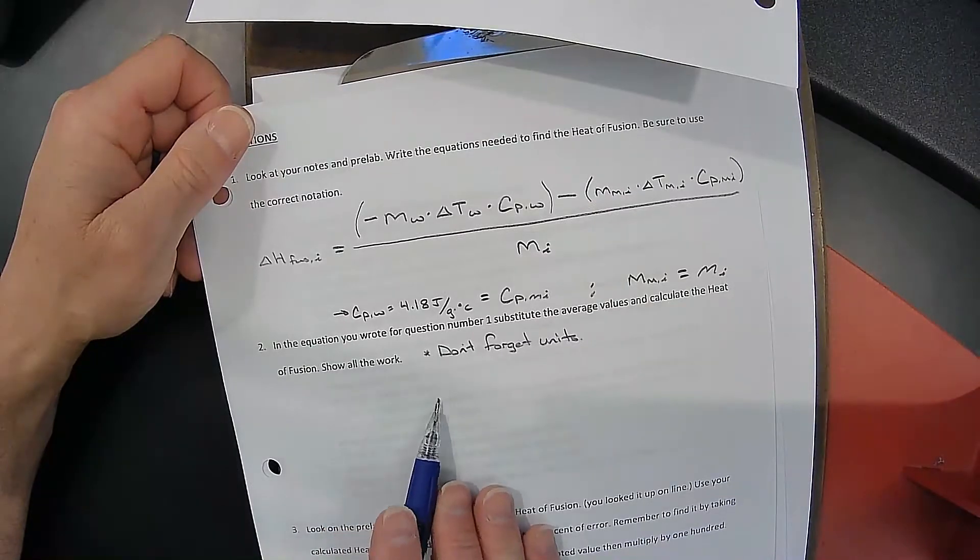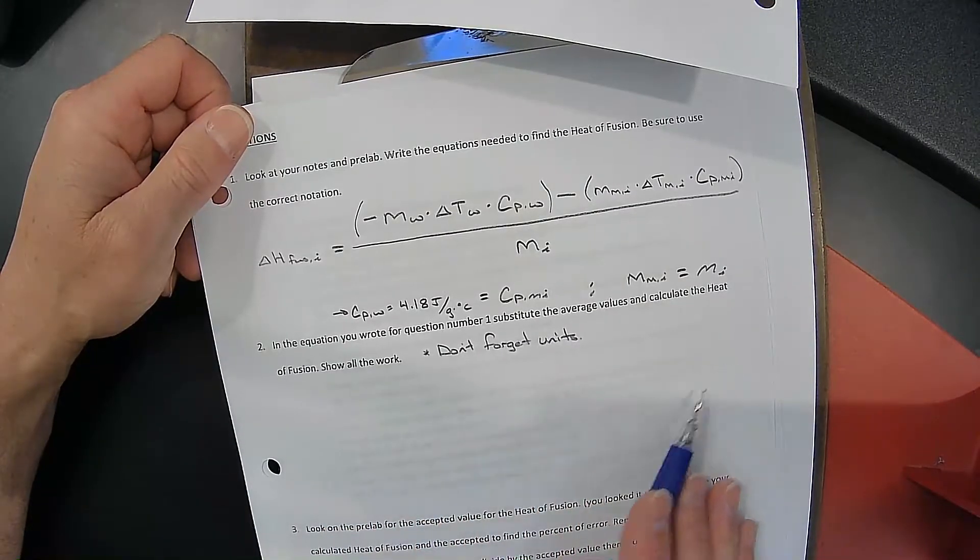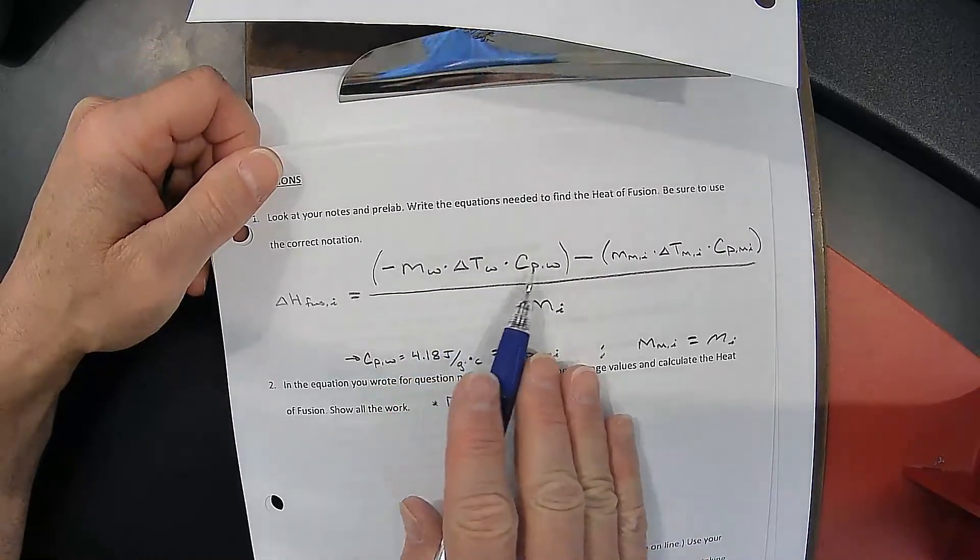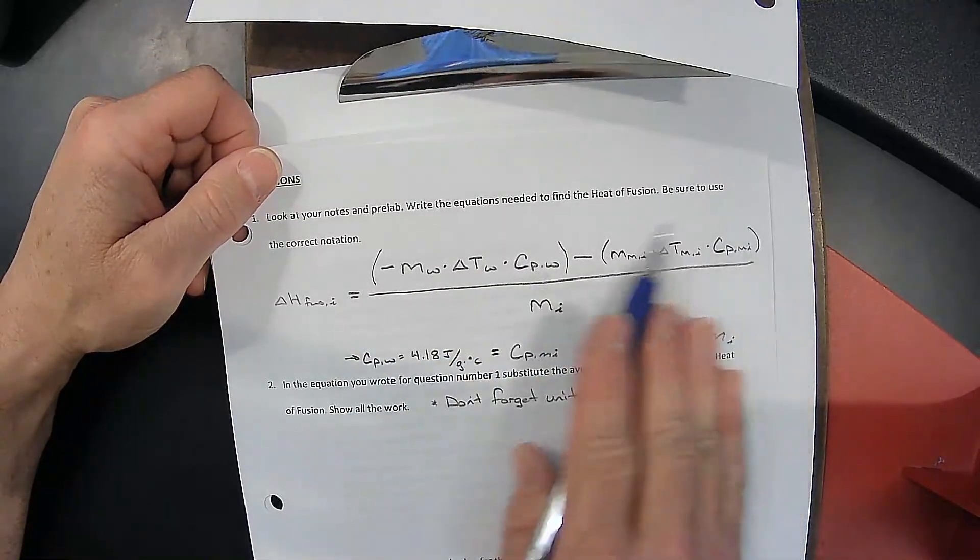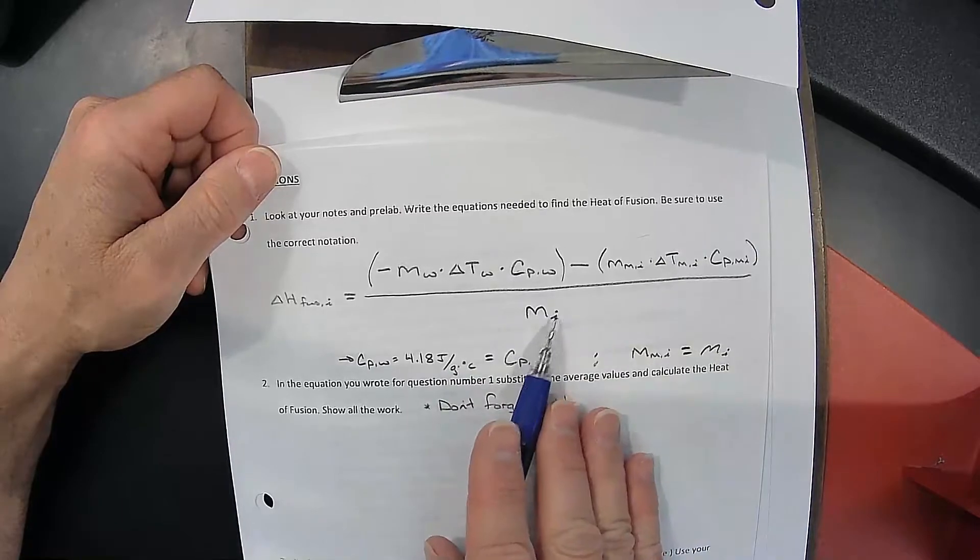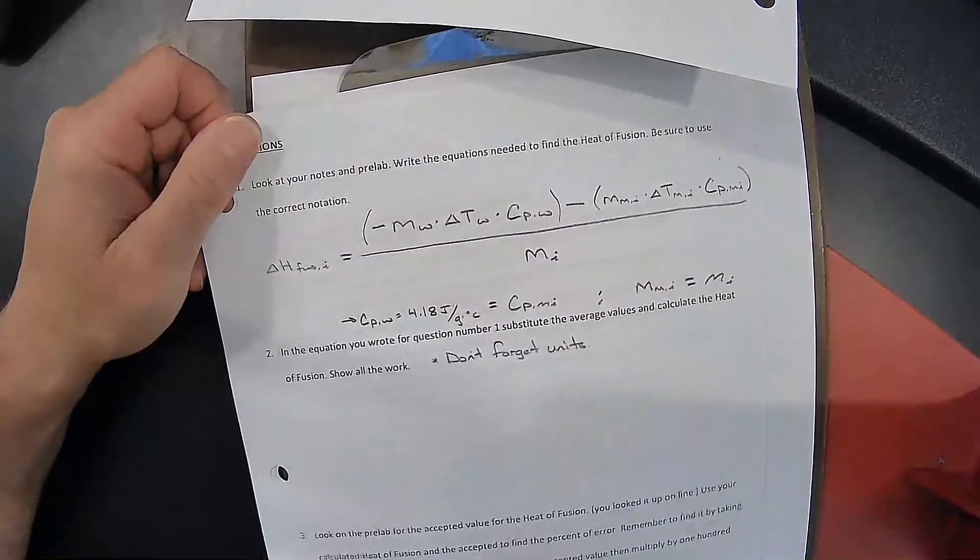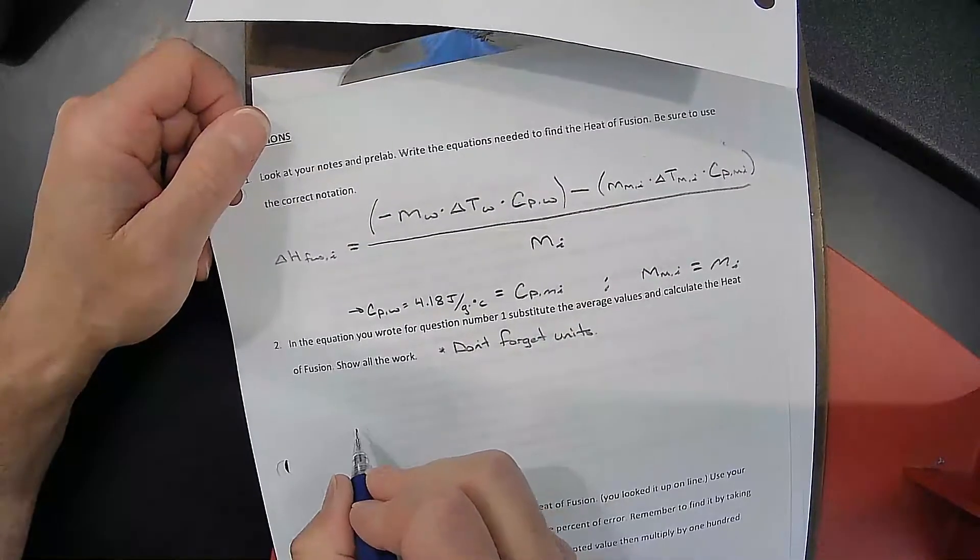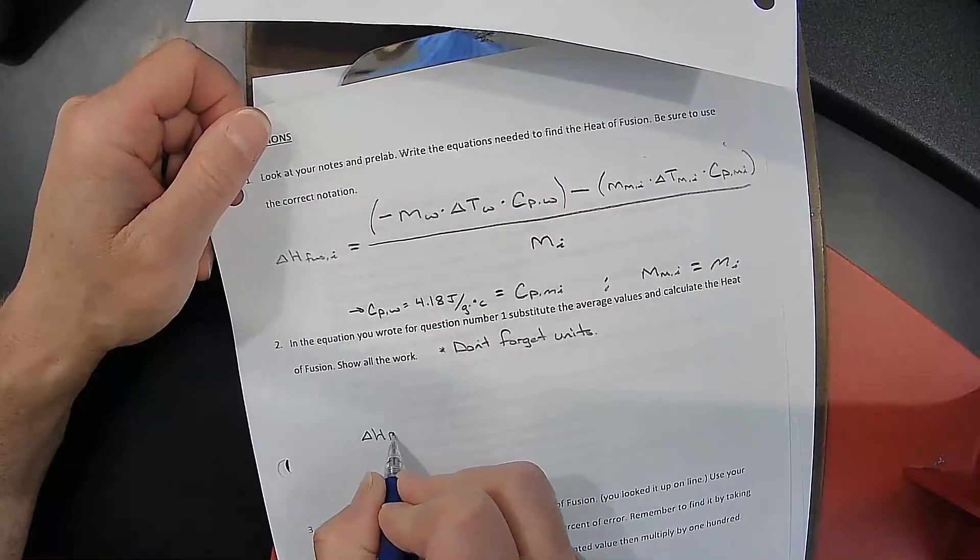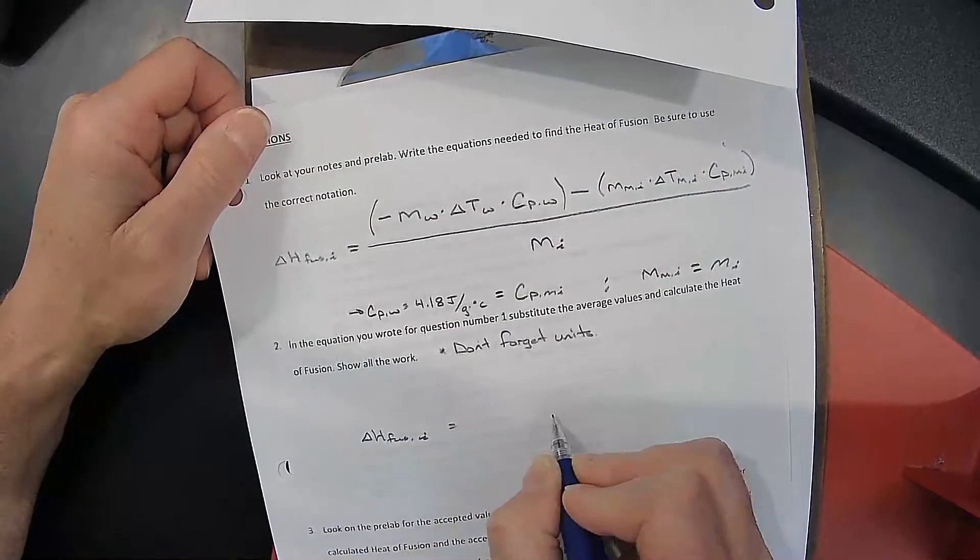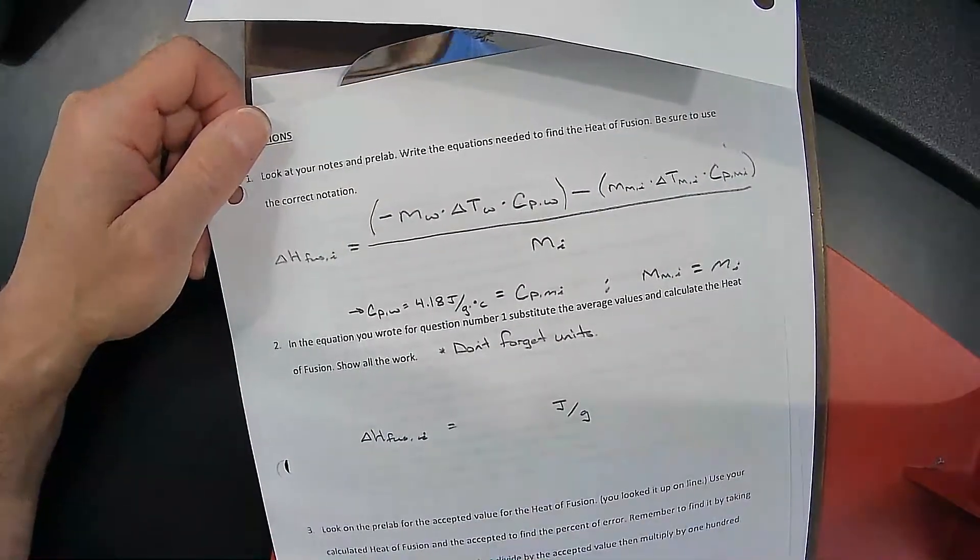We're going to place each of those number values here with their units, showing crossing out units, multiplying these guys, then multiplying those guys, subtracting them, and then dividing by the mass of the ice, showing me that the final units of delta H_FUS of the ice should end up in joules per gram.